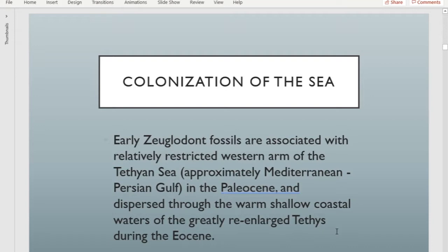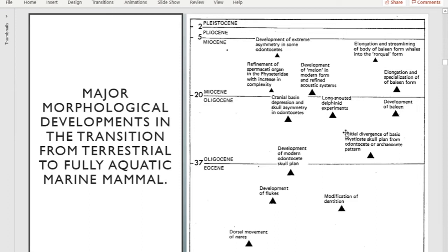Cetaceans diverged early into two groups: archaeocetes are the first group, and then there's divergence between baleen whales (mysticetes) and toothed whales (odontocetes). Whether whaleness evolved once, twice, or three times is debated, but it probably evolved once with an early divergence somewhere in the Eocene to produce the two lineages we have today.